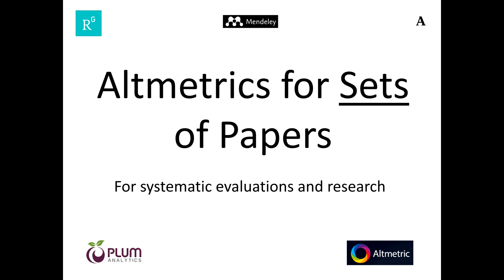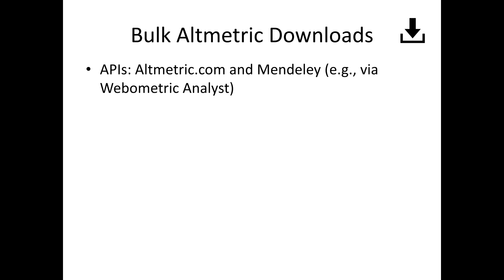Suppose instead you want the altmetrics for every article in a large set of papers, too many to individually collect. There are sources that provide bulk altmetrics for large sets of papers. PlumX Analytics and altmetric.com specialize in providing large-scale altmetrics for institutional evaluations. You can get bulk altmetric downloads from altmetric.com via their API. Mendeley also gives free access to their API, and both are available in Webmetric Analyst. If you have a list of DOIs, click the appropriate button and it downloads altmetrics from these sources for all papers in your file.